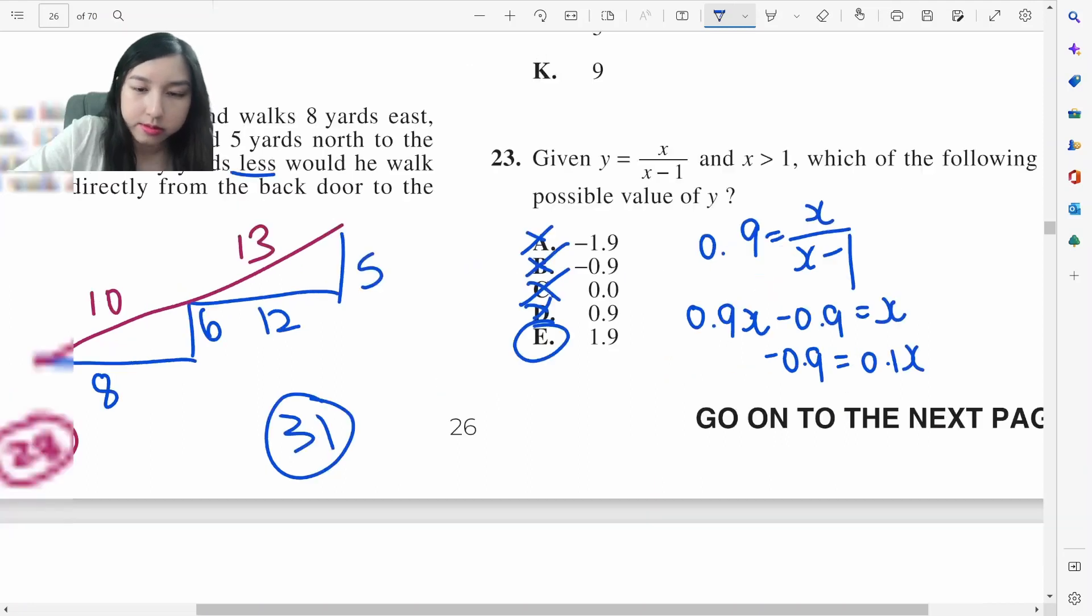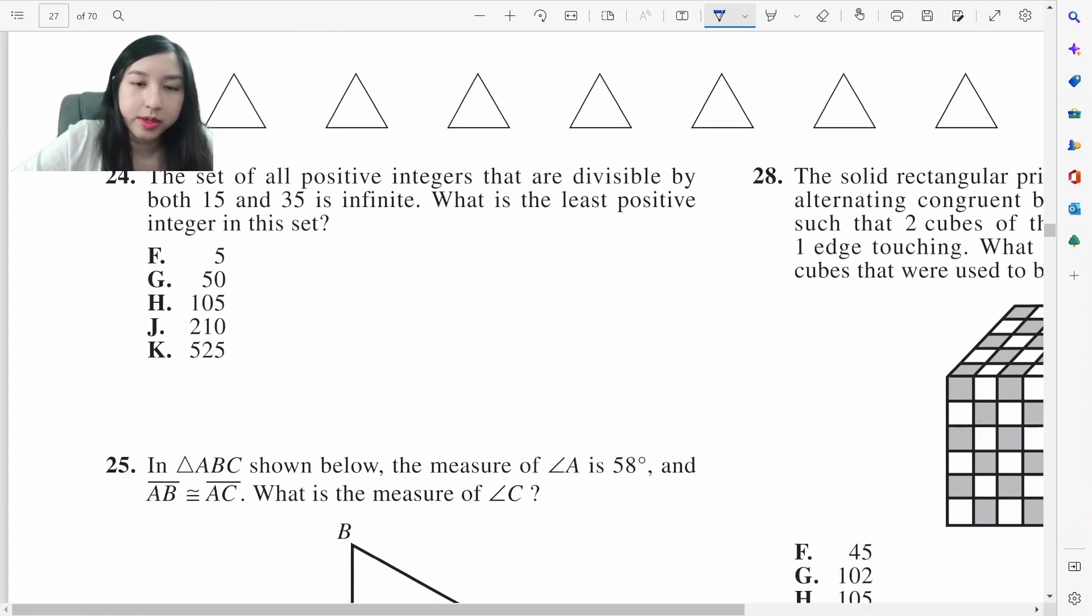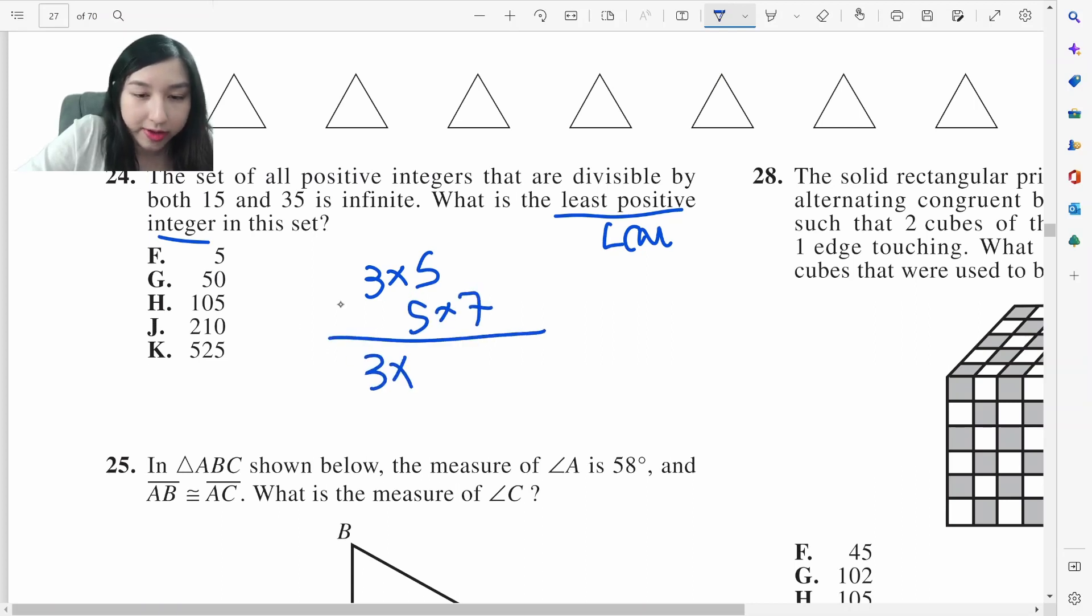A set of positive integers divisible by both this and this is infinite. These positive integers are basically the lowest common multiple. 15 is 3 times 5. 35 is 5 times 7. Right now all the factors, 3 times 5 times 7 is going to be 105.